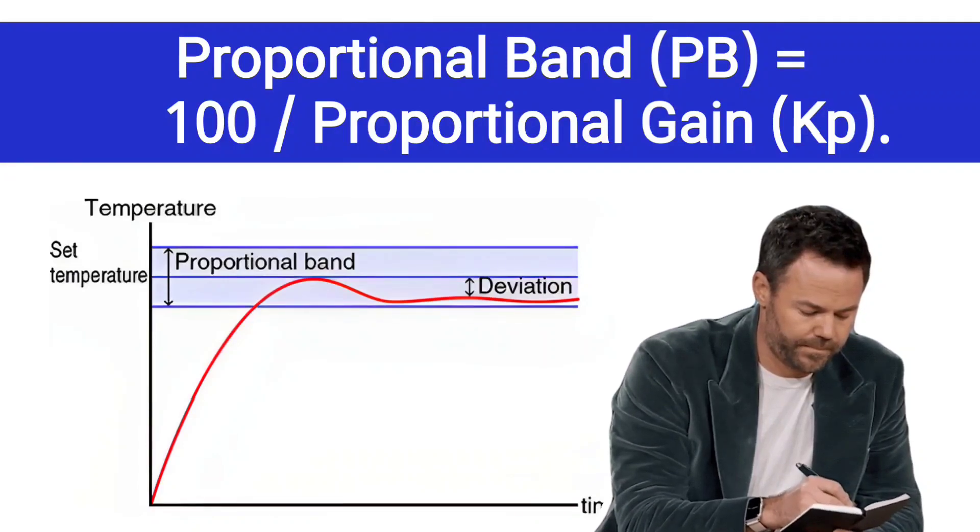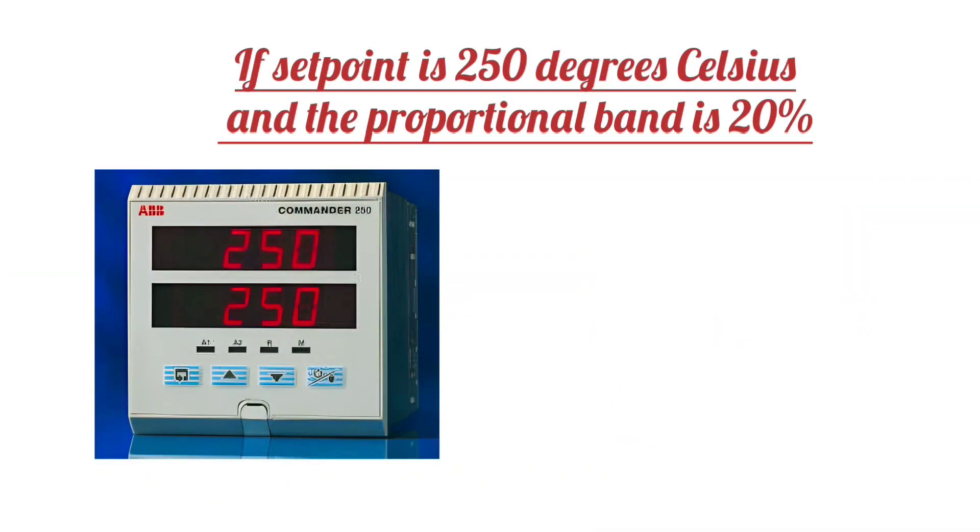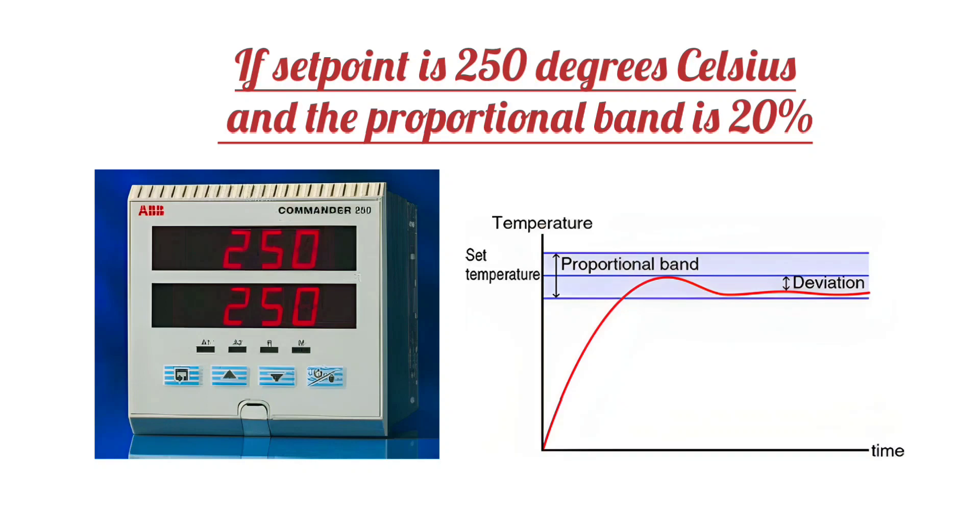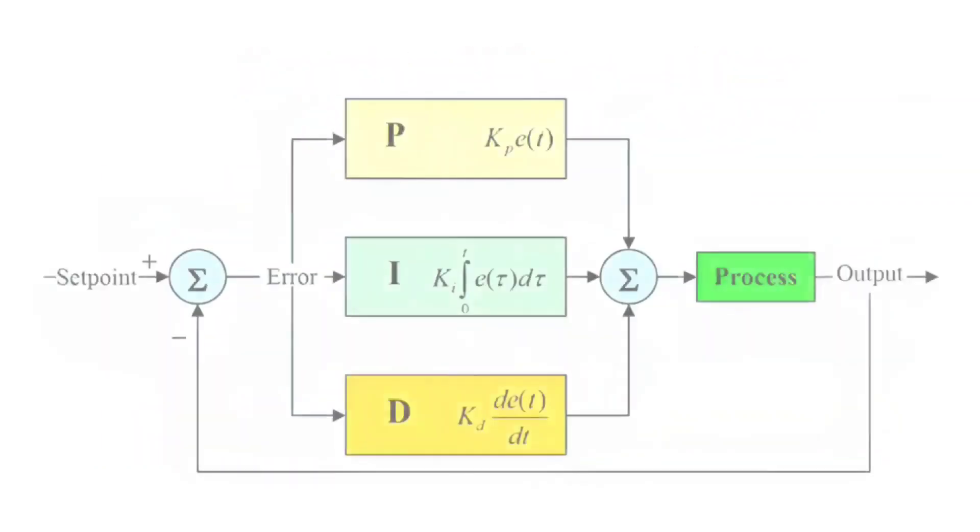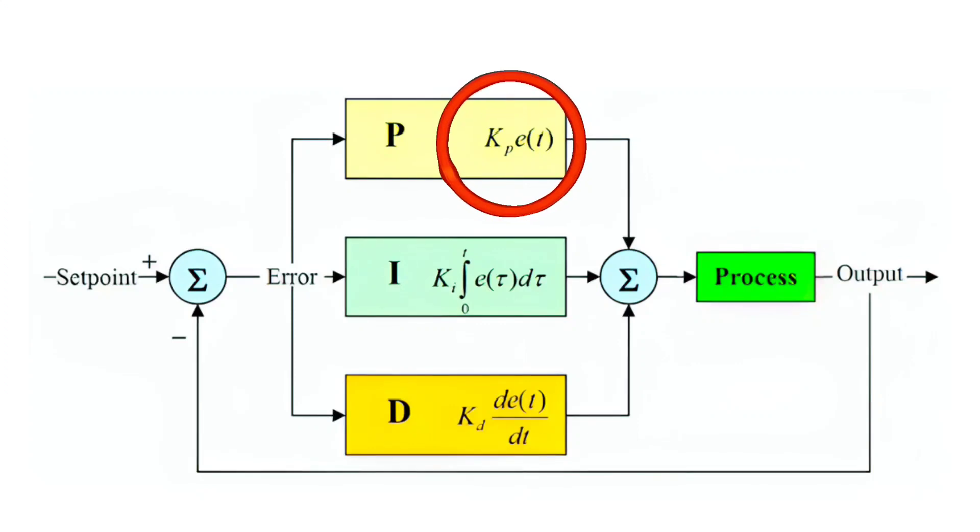Friends, all your work will be done with this formula. If your set point is 250 degrees Celsius and the proportional band is 20%, then you can easily calculate the value of Kp.